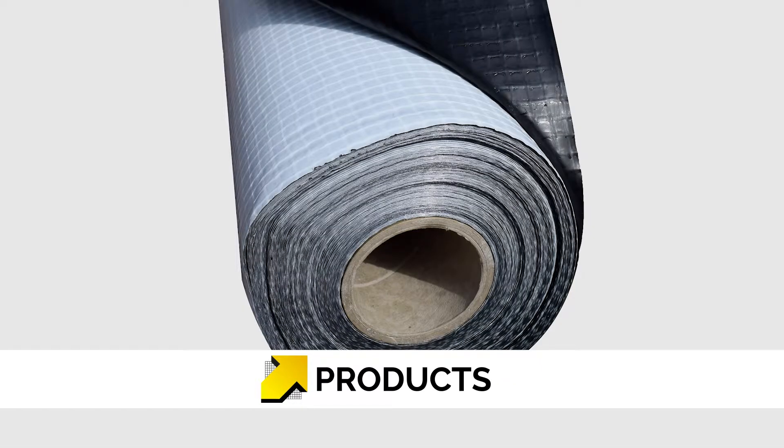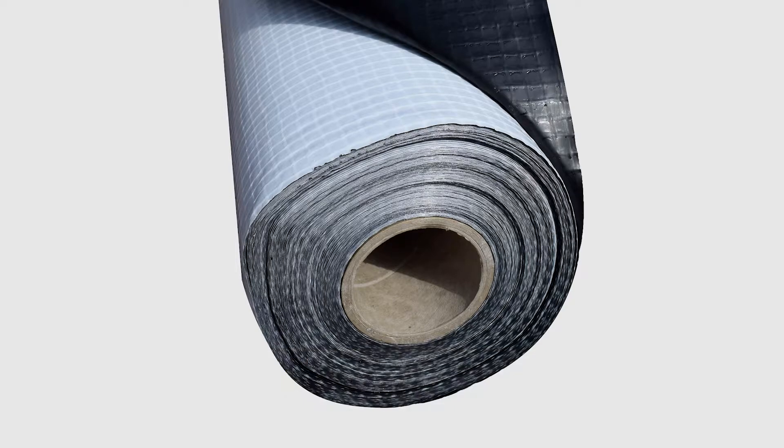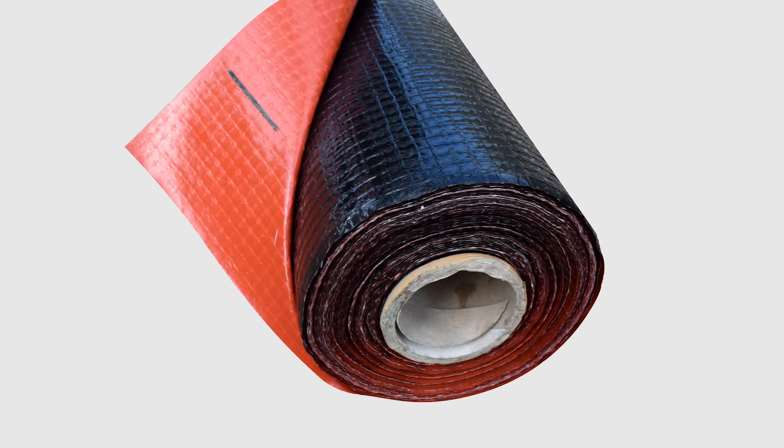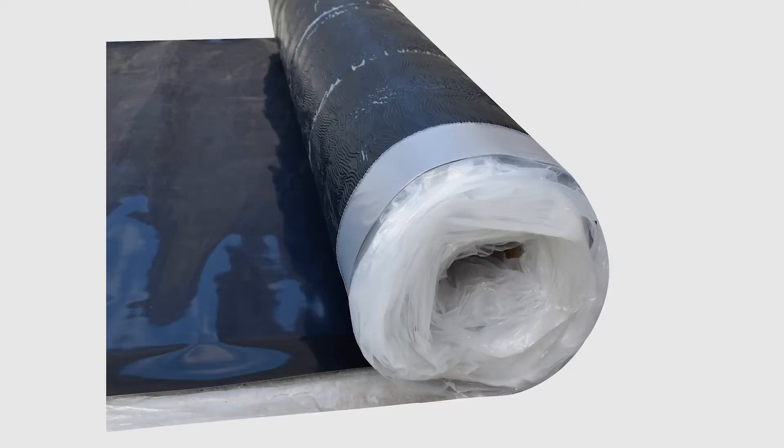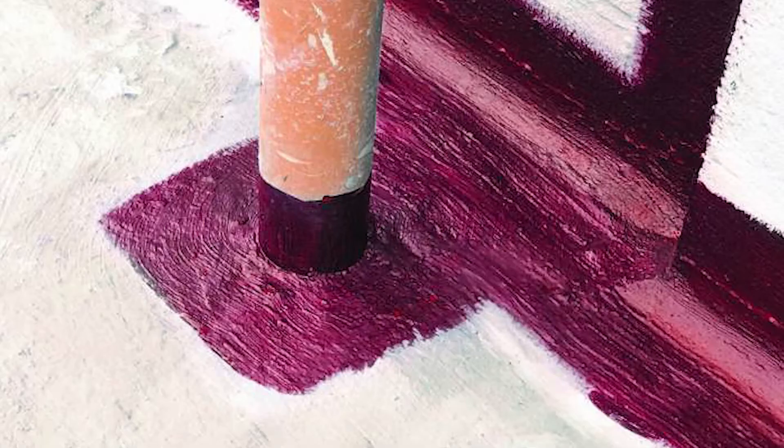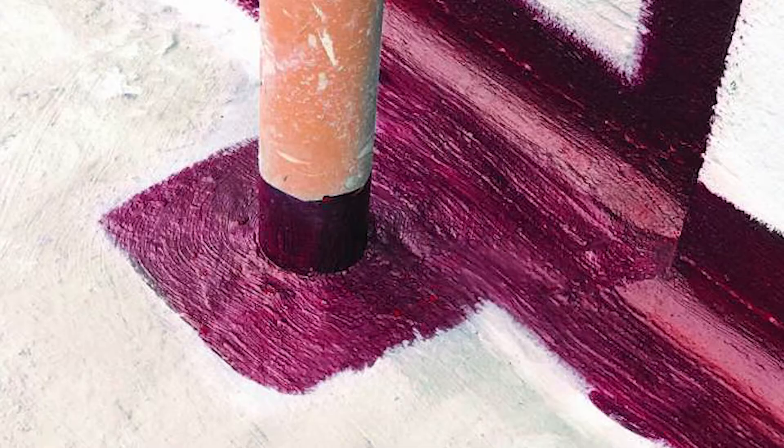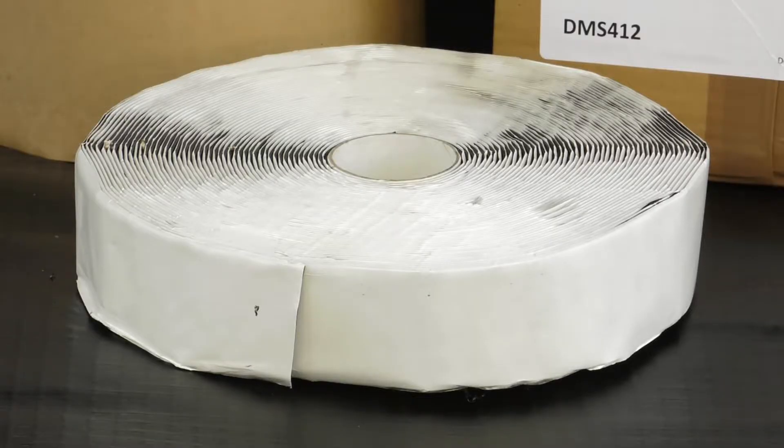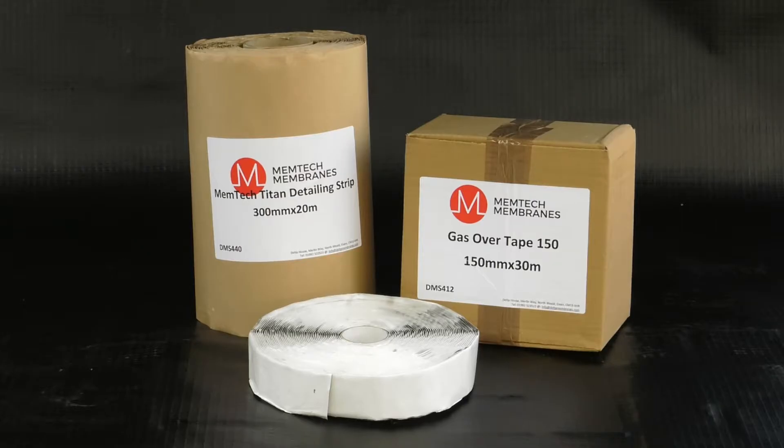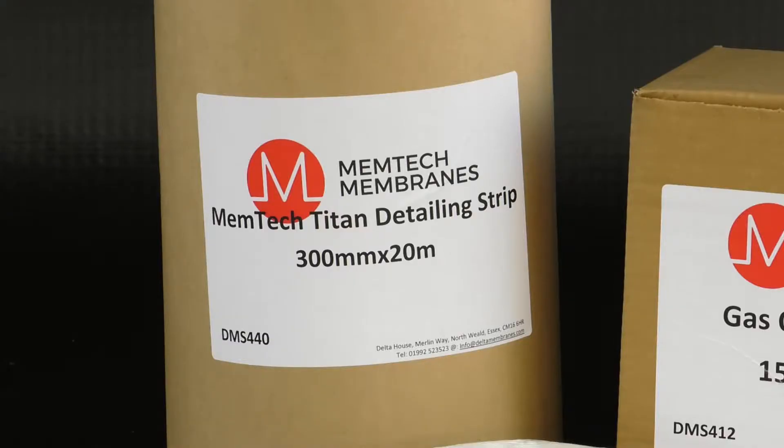Our range of ground gas membrane products include Memtec M1 Membrane, Memtec R1 Radon Membrane, Memtec Titan VOC Membrane, Memtec Liquid Gas Barrier (LGB), Memtec Gas Tape 50, Memtec Gas Over Tape 150, and Memtec Detailing Strip.